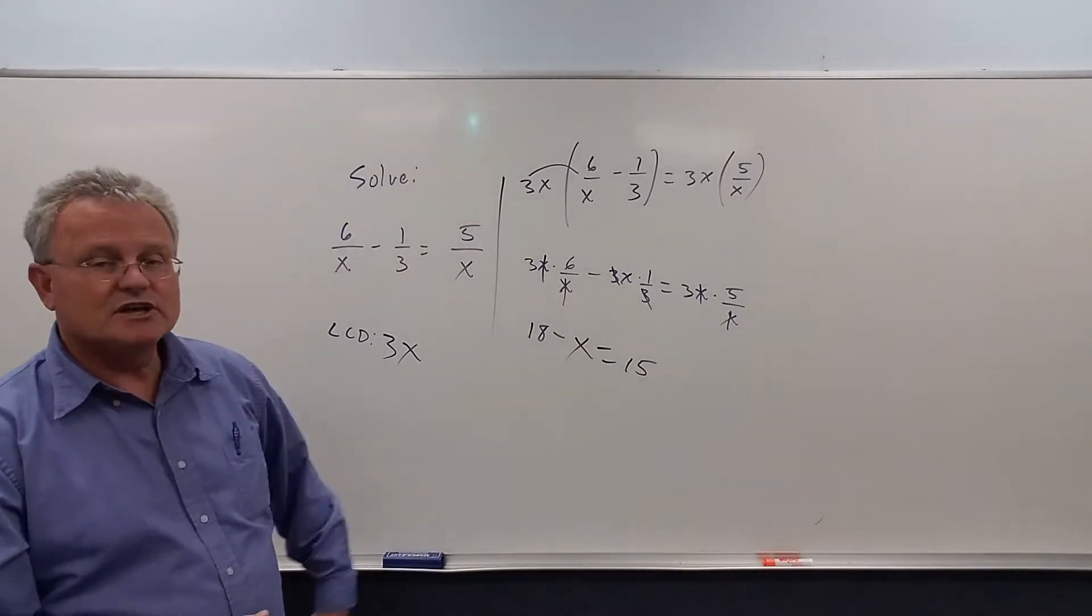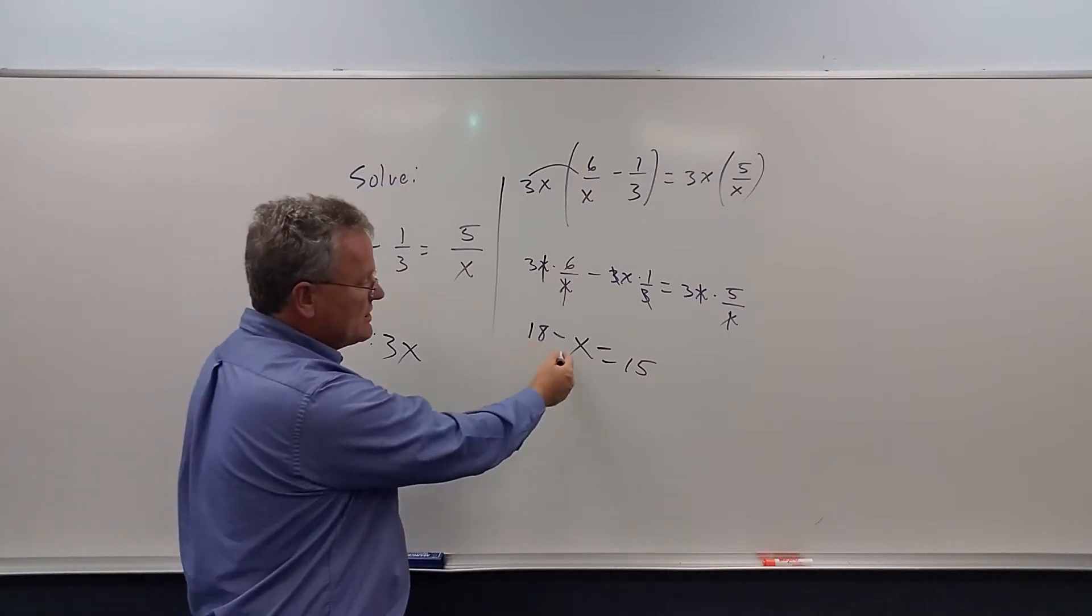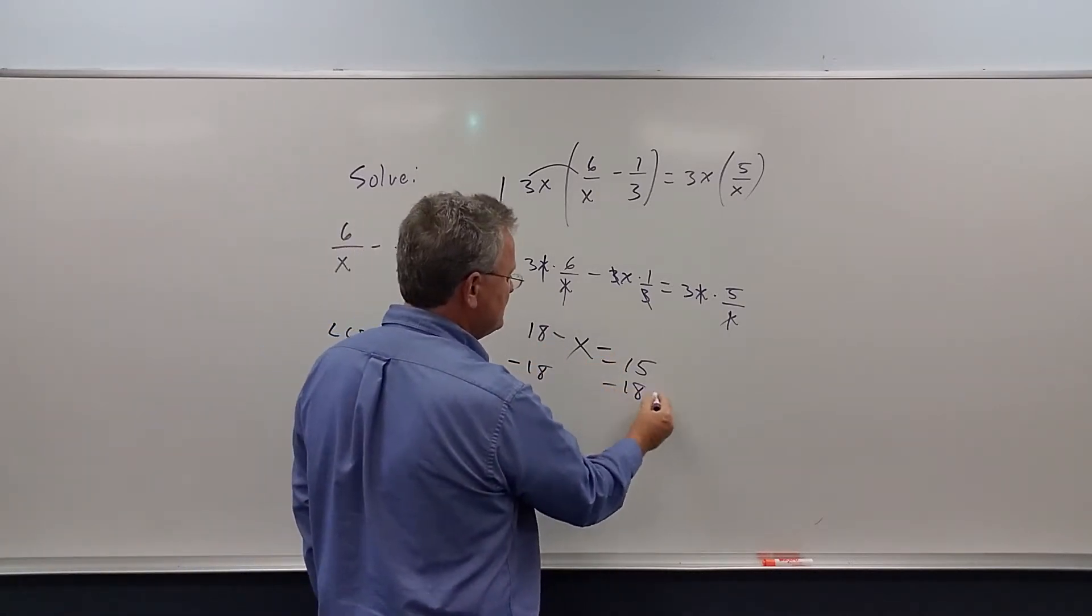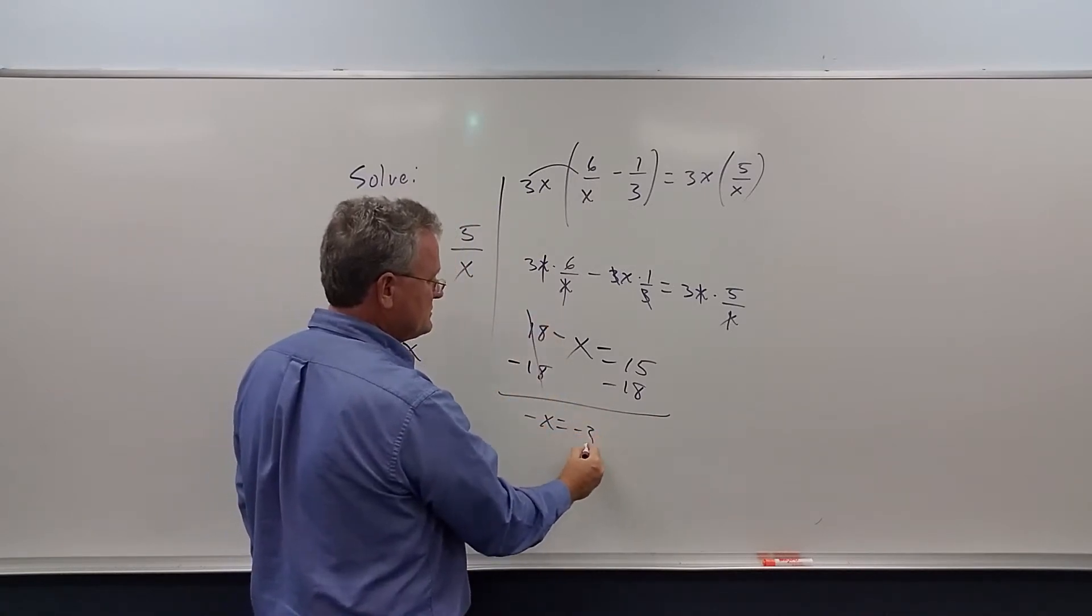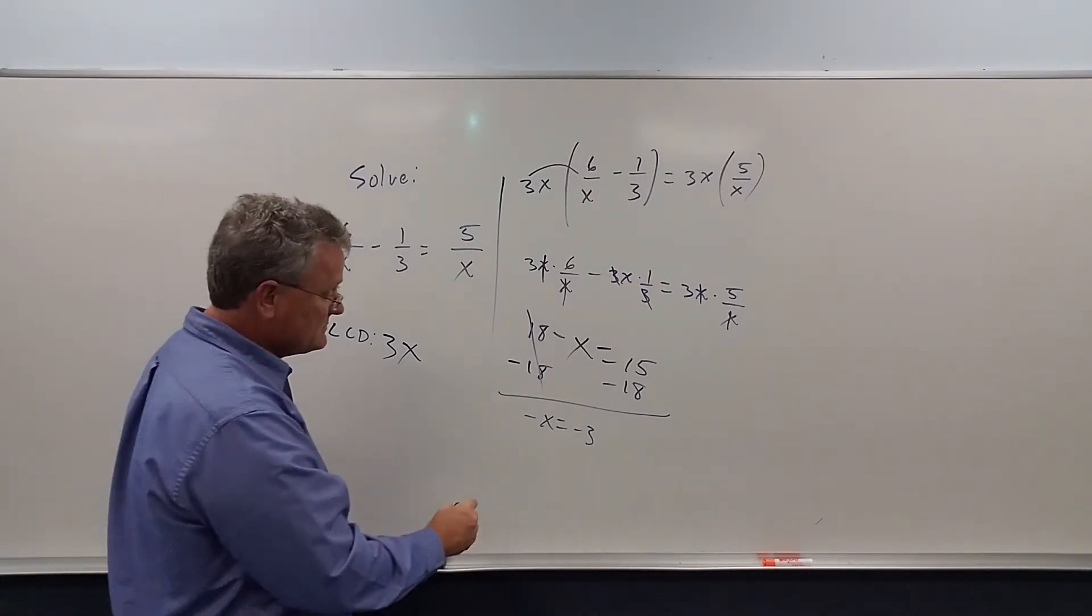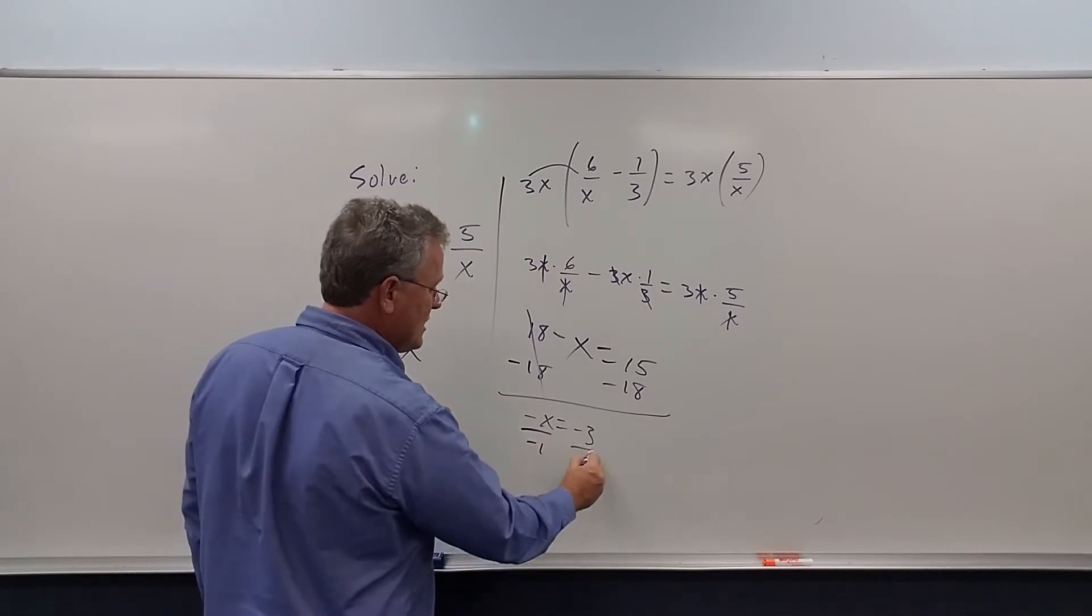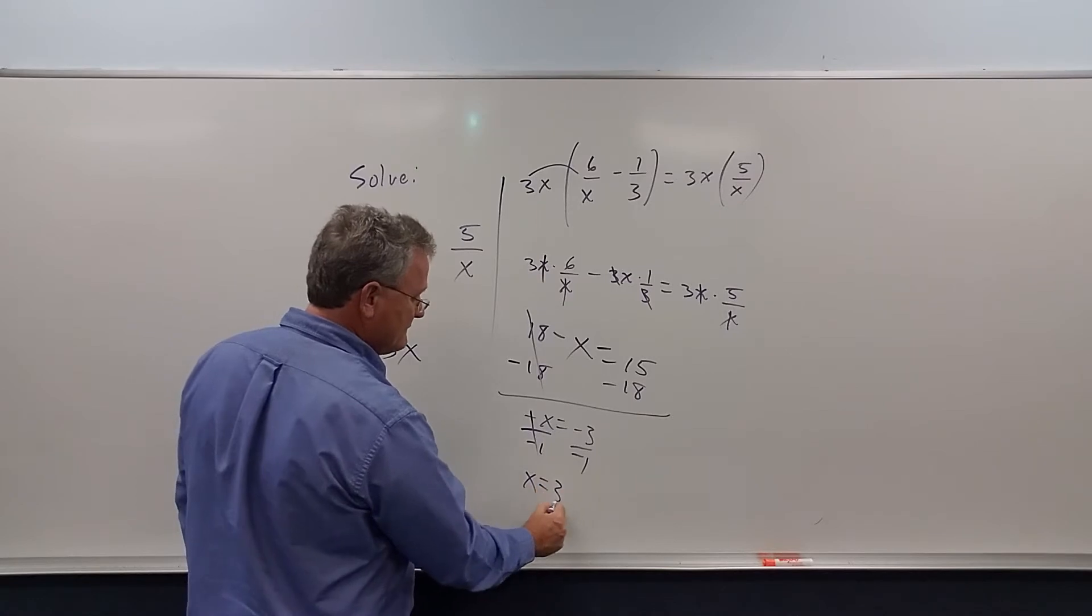Now we just solve this equation. I'm going to subtract 18. Yeah, you could add x. But I'm going to subtract 18 from both sides. Those cancel. We get negative x equals negative 3. Now we're not done. We want to know what x is, not negative x. So multiply or divide both sides by negative 1. Those cancel. A negative over a negative is a positive.